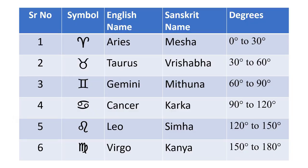The table on this screen shows the first six zodiac signs with symbols, English and Sanskrit names and the degrees of these signs longitudinally. For example, the first sign Aries or Mesha starts at zero degrees and finishes at 30 degrees and the second sign Taurus or Rishabha starts at 30 degrees and finishes at 60 degrees.